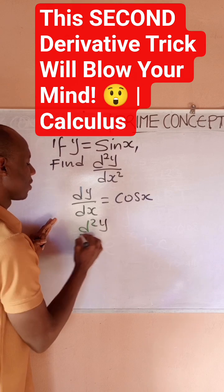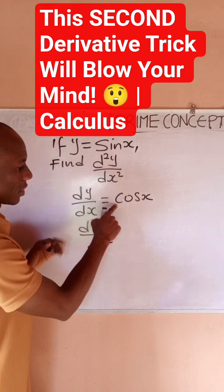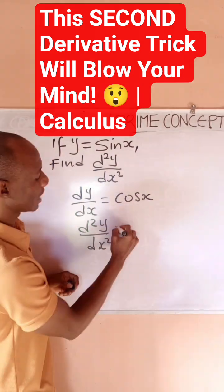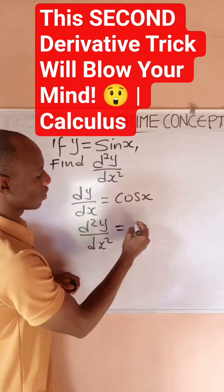So I'll get the second derivative by differentiating my first derivative. When I differentiate cos x, what do I have?